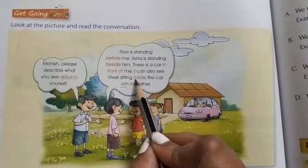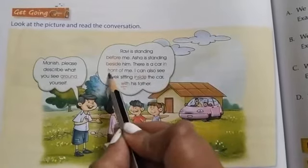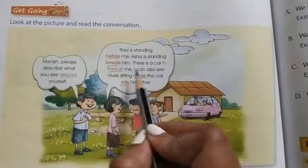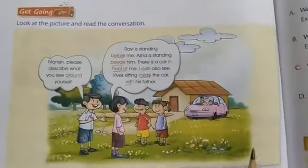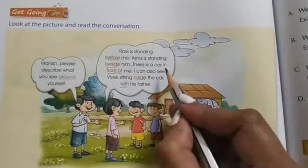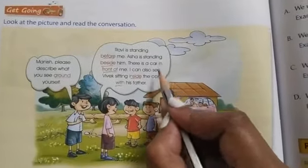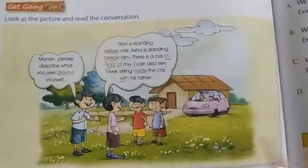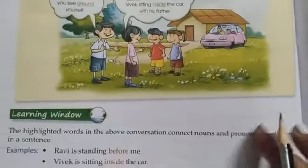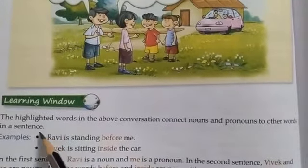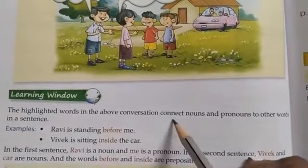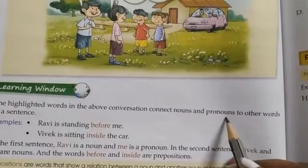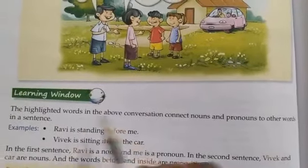So you see the highlighted words over here: before, beside, front of, inside, with — and also 'in'. The highlighted words in the above conversation connect nouns and pronouns to other words in a sentence.